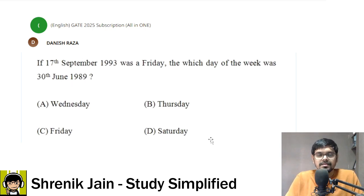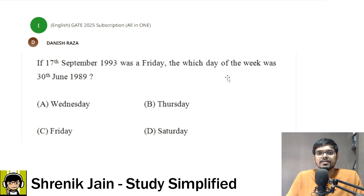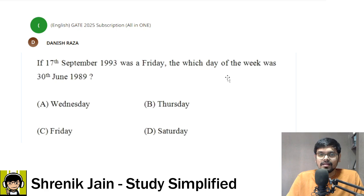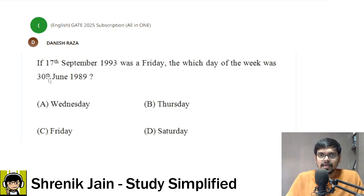There are two ways to solve this question. Method one is the standard approach where the given data has no use — you can use the odd days concept, explained in class, but it is a very lengthy approach. Therefore I avoid method one and follow method two, which is tricks and techniques. The odd day tricks apply when years, months, or numbers are the same, but in this question all three are different, so we break the question and then use the trick.